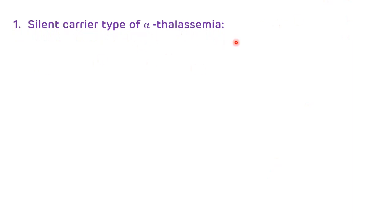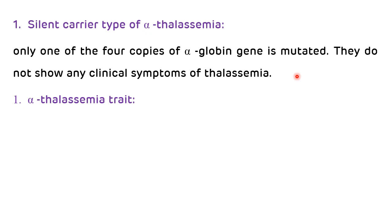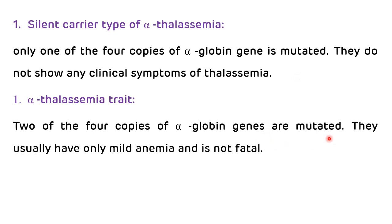In the silent carrier type of alpha thalassemia, one of the four alpha globin genes is mutated. They do not have any clinical symptoms of thalassemia; most patients are asymptomatic. The second type is alpha thalassemia trait, where two of the four copies of alpha globin genes are mutated. These patients will have mild anemia, and it is not a fatal condition.